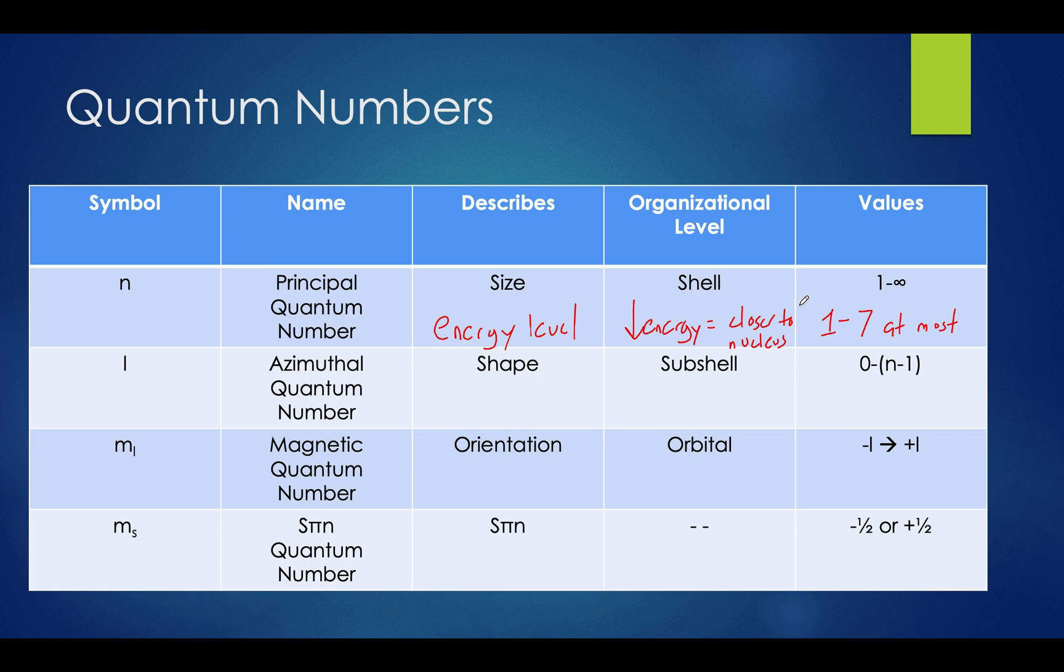Within each shell, we have several subshells, which are described by the azimuthal quantum number, which uses the letter L as its symbol. The azimuthal quantum number describes the shape of the subshell. The values of L are always capped at n-1. So common values of this will be 0, 1, 2, and 3, which are used to refer to S, P, D, and F subshells. Energy increases as L increases.